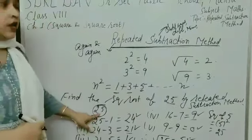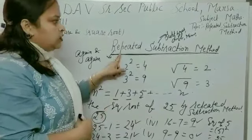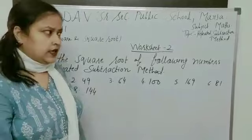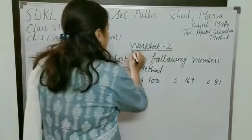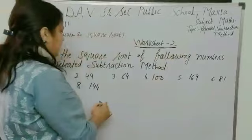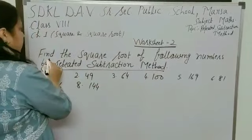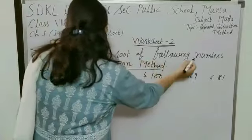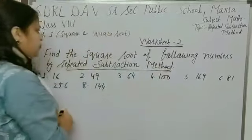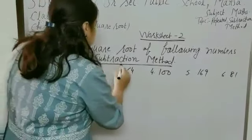Now, we will discuss some more questions related to this topic. In the book Secondary Mathematics of Class 8, worksheet 2 is given which is related to this topic, repeated subtraction method. The question is: find the square root of the following numbers by repeated subtraction method.